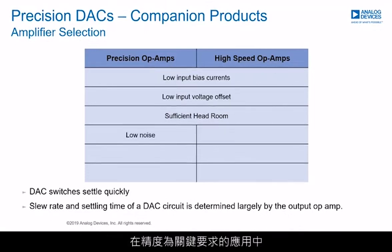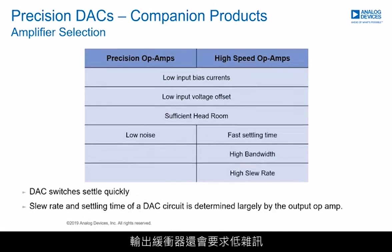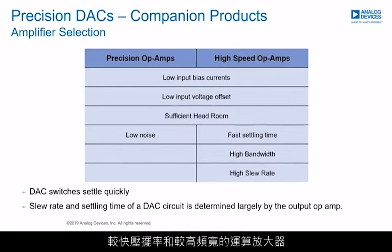In applications where precision is a key requirement, the output buffer needs to also offer low noise. Whereas in applications where higher speed is required, operational amplifiers with faster settling time, faster slew rate, and higher bandwidth should be selected. Ultimately, the decision of the type of amplifier depends on the application.